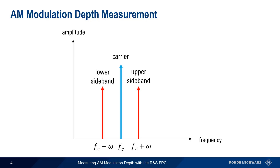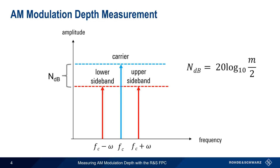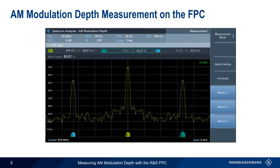Recall how we measure AM modulation depth in the frequency domain. We need to measure both the level of the unmodulated carrier and the level of the modulated sidebands, calculate the difference between them, and then use our equation to derive modulation index M. The AM modulation depth measurement on the FPC does exactly this. It automatically places three markers: one on the peak, which is assumed to be the carrier, and two on the next highest peaks, assumed to be the sidebands.